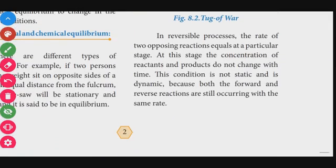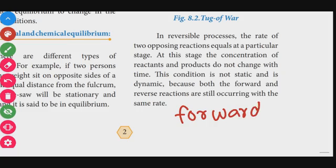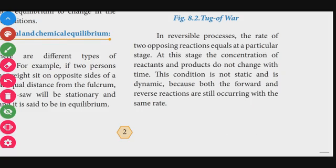In a reversible process, the rates of two opposing reactions become equal at a particular stage. At this stage, the concentrations of reactants and products do not change with time. This condition is not static but dynamic, because both the forward and reverse reactions are still occurring at the same rate. That is the equilibrium stage.